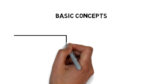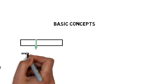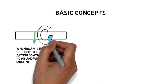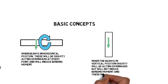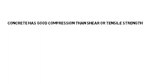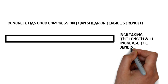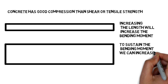When the beam is in a horizontal position, there will be gravity acting downward at every point and it will induce bending moment. When the beam is in a vertical position, gravity will be acting downward but will not induce bending moment, and there will be compressive stress. Concrete has good compression strength compared to shear or tensile strength. Increasing the length will increase the bending moment. To sustain the bending moment, we can increase the width and depth of the beam.